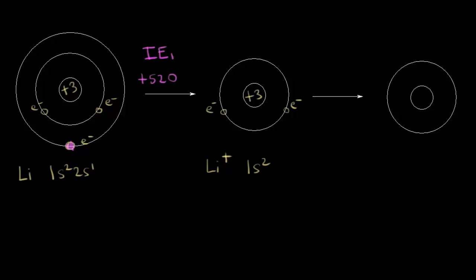We could apply more energy and pull away another electron. We're taking a second electron away, so we call this ionization energy two, and this value turns out to be approximately 7,298 kilojoules per mole. If we take away that second electron, we still have three positive charges in the nucleus but only one negative charge — only one electron. So this is no longer the lithium +1 cation; this is the lithium +2 cation, because three minus one is plus two. The electron configuration would be only one electron in a 1s orbital: 1s1.